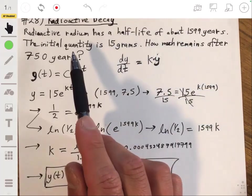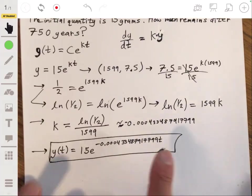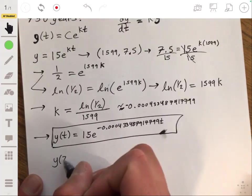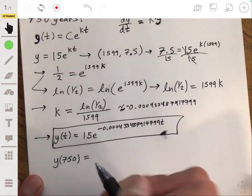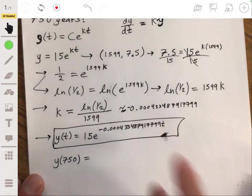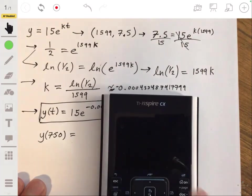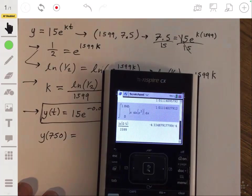We can figure out how much remains after 750 years by evaluating this for 750. So we just take y of 750. We're going to put 750 into there. So I'm just going to do it all in my calculator so I don't mess up.